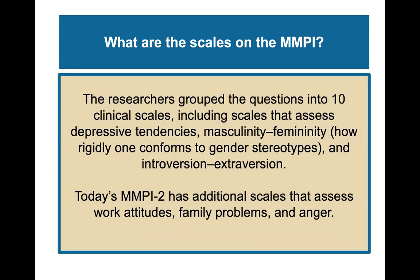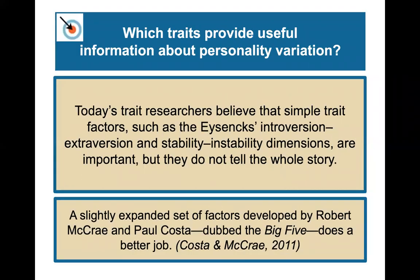The researchers for the MMPI grouped the questions into 10 clinical scales, including scales that assess depressive tendencies, masculinity-femininity — how rigidly one conforms to gender stereotypes — and introversion-extroversion. Today the MMPI-2 has additional scales that also assess work attitudes, family problems, and anger.